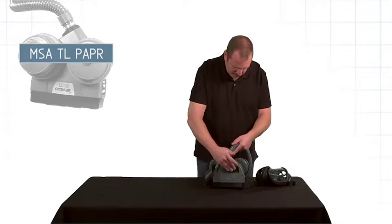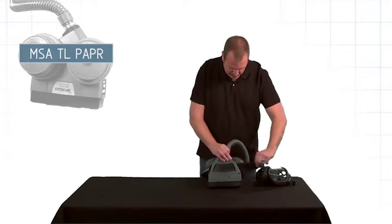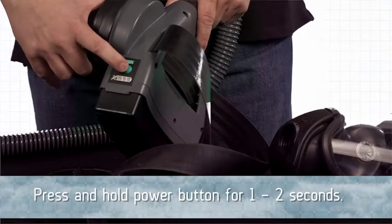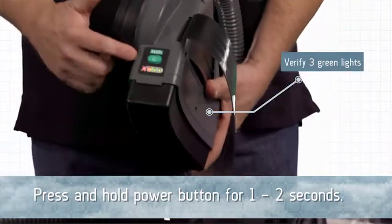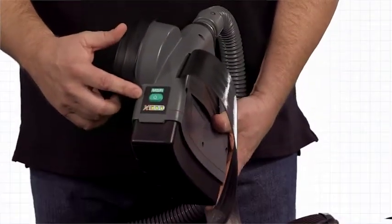To install the belt, slide it through the back of the unit. Turn the unit on, verifying the three green lights are illuminated and then leave the unit running.